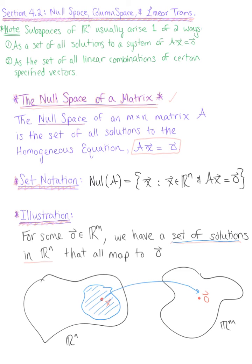And we say that the set of all solutions in ℝⁿ that map to this zero vector, as this shaded region here does, is the null of matrix A.